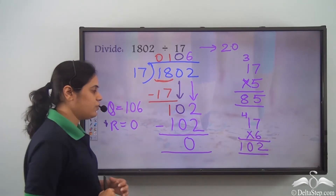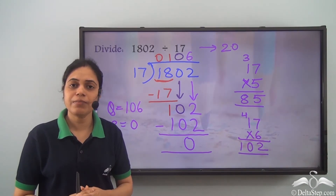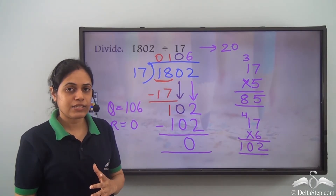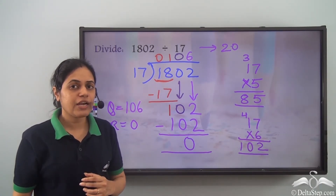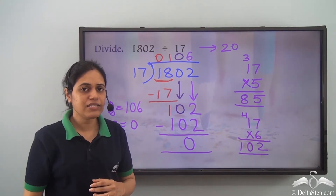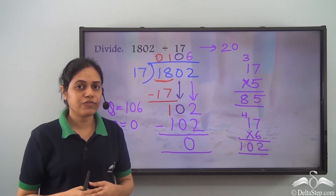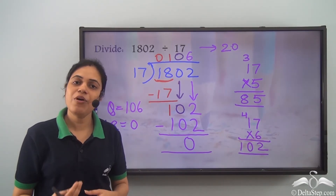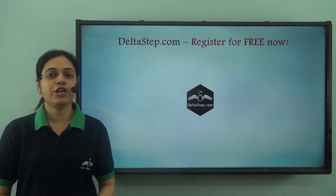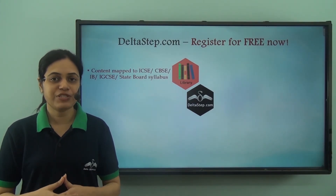Whenever you need to divide any number by a two-digit number, round the divisor to the nearest ten so you don't have to check every number — it makes the process fast and gives a fair estimate. Take different sums of this type and try them out until you get them all correct. If you like this video, subscribe to our channel.